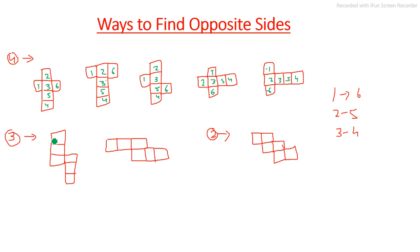When three boxes are in a row, the alternate boxes are also on the opposite side. So if one is here, six will be here; two is here, so five is here; and three is here, so four is here. The same rule applies in similar three-box arrangements.